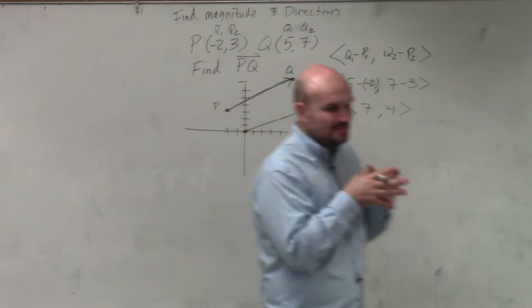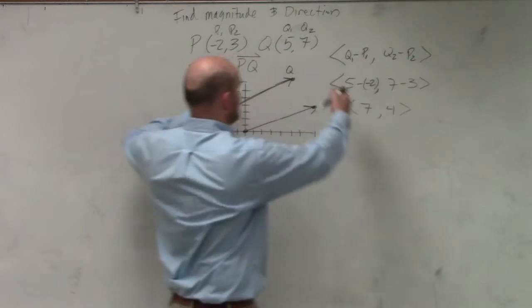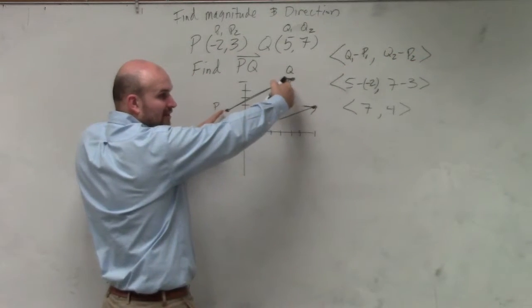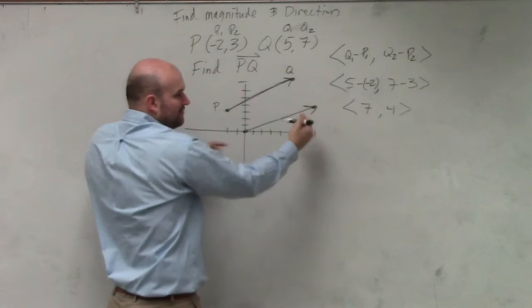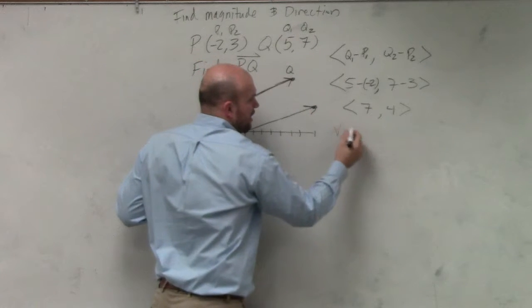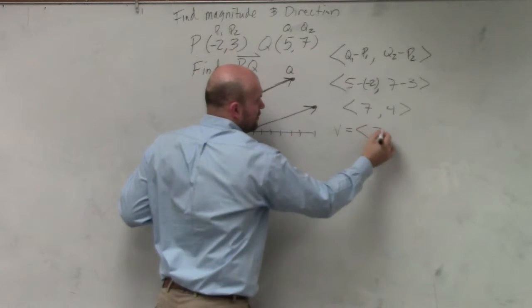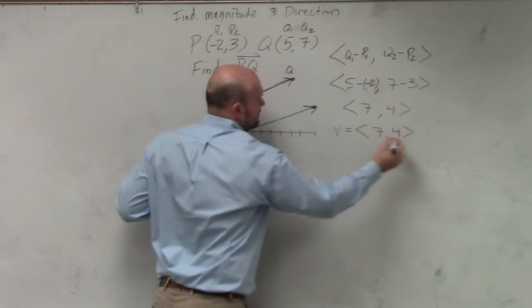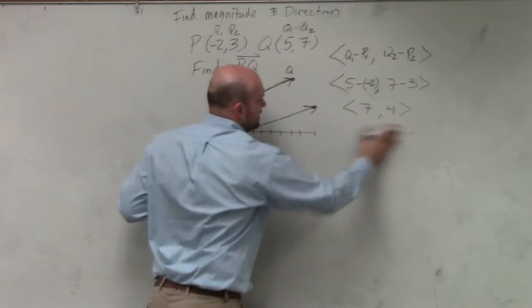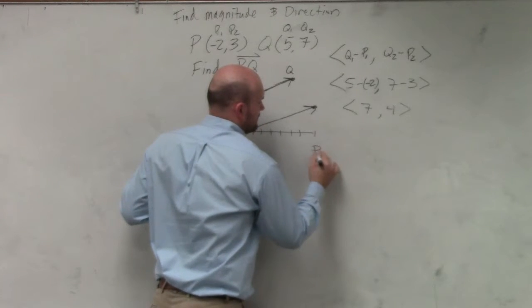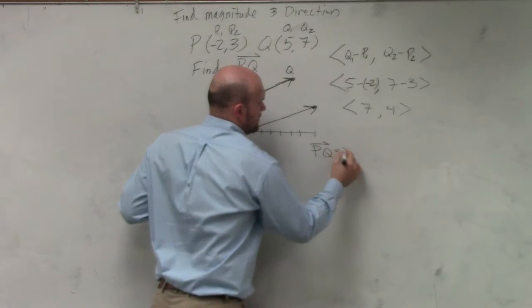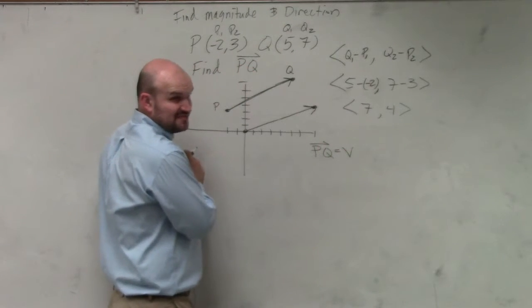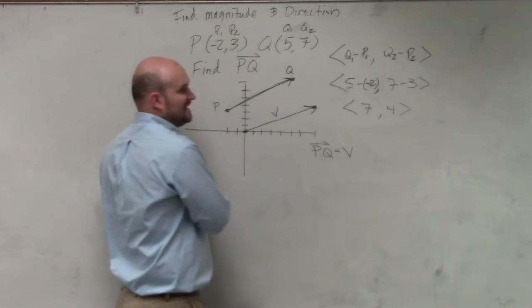But what's important, what I did, was I took this vector that had an initial point and terminal point, and I rewrote it in component form. This is what we call component form. And usually, component form, we give them kind of letters, like V. This is vector V.